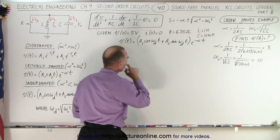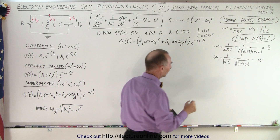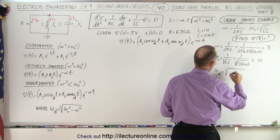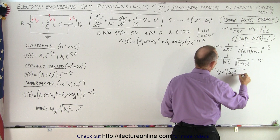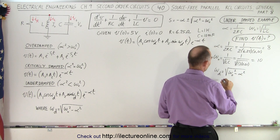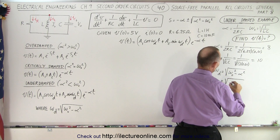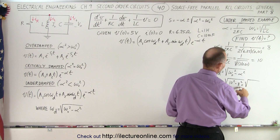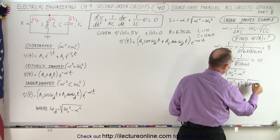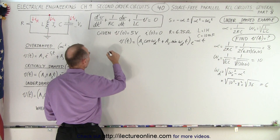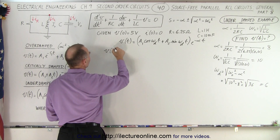Now we can find omega_d. Omega_d equals the square root of omega naught squared minus alpha squared, because omega is bigger than alpha. That gives us the square root of 10 squared minus 8 squared, which is the square root of 100 minus 64, which is the square root of 36, equal to 6.